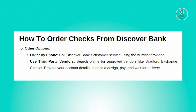And lastly, another option is to order checks through third-party vendors approved by Discover. Vendors such as Bradford Exchange Checks can print and mail checkbook orders to your address. Simply search online for vendors that offer this service. You'll typically need to provide your account details including your Discover account number, name, address, and routing number.